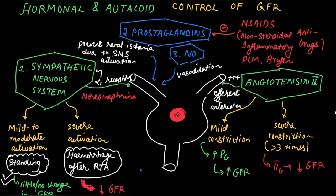In summary: mild to moderate sympathetic activation during standing has no effect on GFR, while severe activation during hemorrhage reduces GFR. Mild to moderate activation is buffered by prostaglandins, which prevent renal ischemia and protect the kidneys; these prostaglandins are inhibited by NSAIDs, and chronic ingestion can cause renal failure. Nitric oxide causes vasodilation; angiotensin 2 constricts the efferent arterioles — mild constriction increases glomerular capillary hydrostatic pressure and increases GFR, while severe constriction increases colloid osmotic pressure and decreases GFR. Thank you for watching.